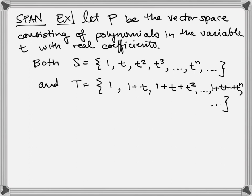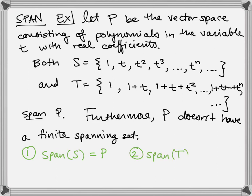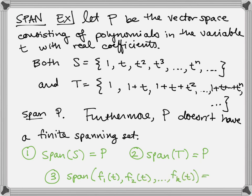I hope you may have noticed that already. In fact, these are two spanning sets for P, but I'd like to convince you of even more — that you can't span P with a finite set. So P does not have a finite spanning set. Here is the plan: one, we're going to look at the span of S and show that's P. Two, we're going to look at the span of T and show that's also P. And three, we're going to look at the span of any finite collection of polynomials and show that that can't possibly be P. There's going to be something in P that we're not able to span.